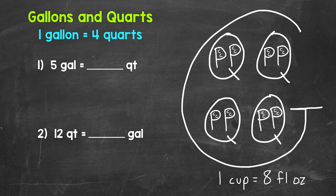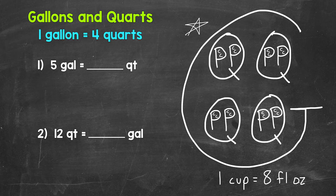To start, there are four quarts in a gallon. In other words, one gallon equals four quarts. I have a big G over here representing a gallon to help us with capacity conversions, and we can see those four Qs in there equaling a gallon.